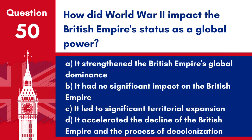Question 50: How did World War II impact the British Empire's status as a global power? a. It strengthened the British Empire's global dominance. b. It had no significant impact on the British Empire. c. It led to significant territorial expansion. d. It accelerated the decline of the British Empire and the process of decolonization. Answer: d. The aftermath of World War II saw Britain weakened economically and militarily, leading to an accelerated decolonization process and the end of its status as the world's leading imperial power.